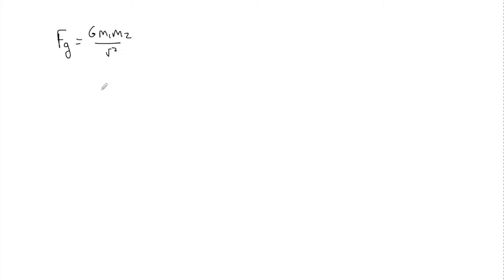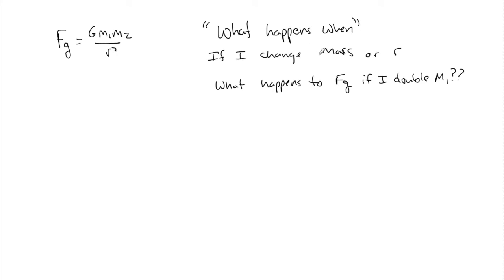The most common question that I do see though with this F_g equals G M1 M2 over R squared, if you're not going to be solving, they're going to ask these questions and I call them the what happens when. And you're going to see these problems all throughout physics but just very common inside this particular topic. And it's what happens when I manipulate one of the variables here. If I change mass or I change R the distance between them. Here's always what I do and here's an example like what happens to F_g if I double M? So what happens when I double M1? What happens to F_g? Well here's what I do for all these types of questions.